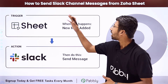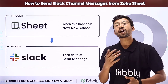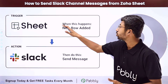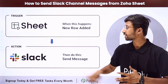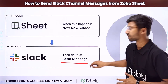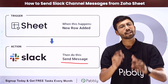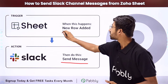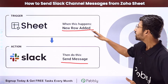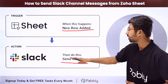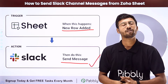In this video we will learn how to send a Slack channel message from Zoho Sheets. Suppose you are adding new data into your Zoho Sheets and you want that whenever a new row of data is added, you want to send those details as a channel message on your Slack channel. You can completely automate this process.